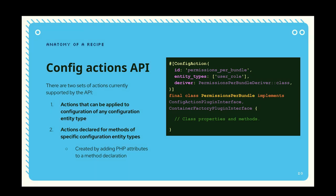There is also a config action API. This is an example of the code to actually define a config action — it's done by declaring a class and using a PHP attribute to provide the different elements defining the metadata for that configuration action. You can see it's got an ID value, and in this case it's specifying which entity types this config action can be used against, because there are fundamentally two different kinds of config actions. Anything that doesn't have a value for entity types can be used globally on any kind of entity, but some config actions are meant to only be used with specific ones.